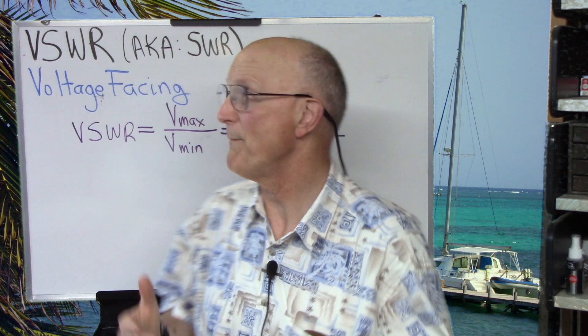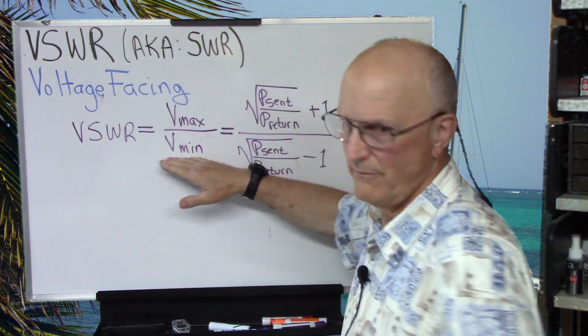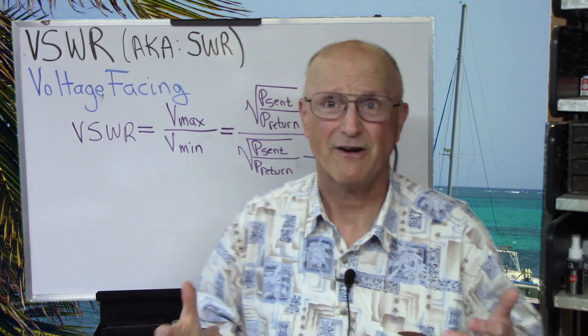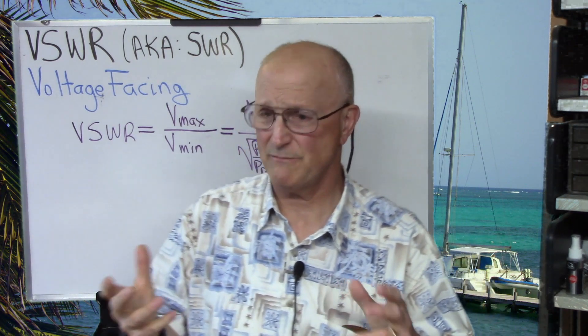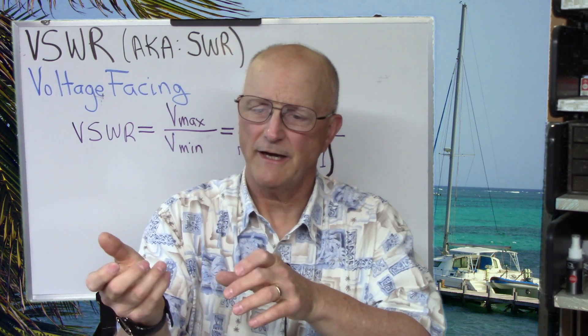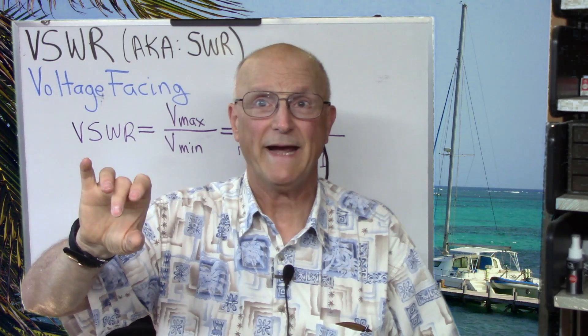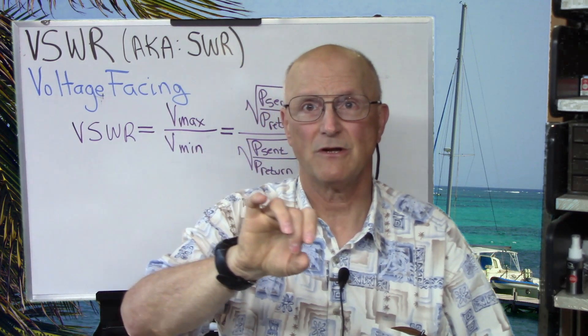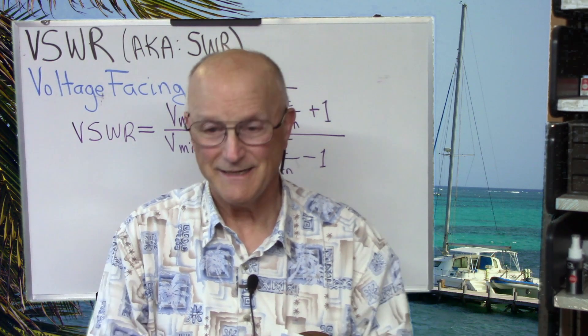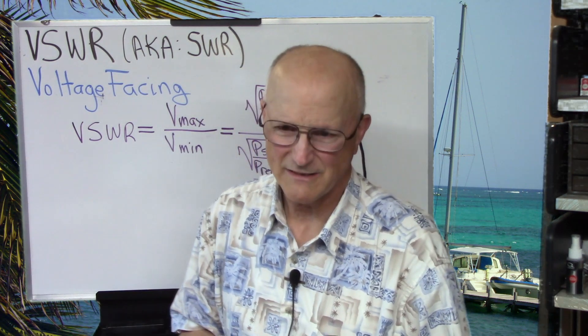VSWR stands for voltage standing wave ratio. And as such, it is a ratio of the maximum voltage over the minimum voltage on a transmission line. Now, it's really hard to actually measure this. Because you have to have instrumentation that allows you to go along a transmission line, measuring the voltages along the way, and looking for the maximums and minimums along the entire transmission line. And that is not an easy thing to do. And from what I can tell, the equipment is quite expensive.